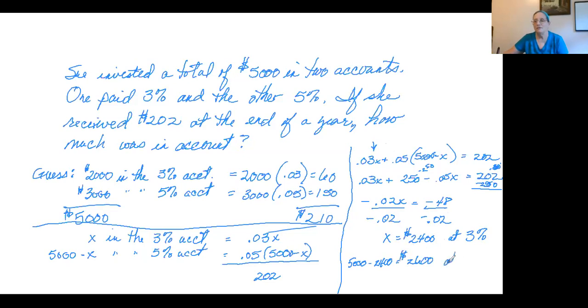That's the amount invested at 5%, and I will leave it to you to show that that adds up to $5,000 and that the interest will come out to be $202. So that's a very common type of interest problem, and I hope that helps.